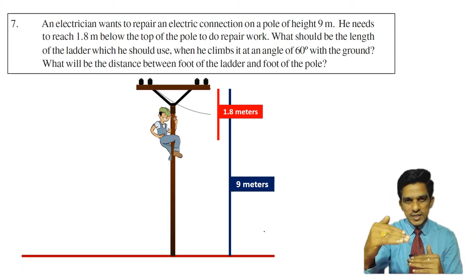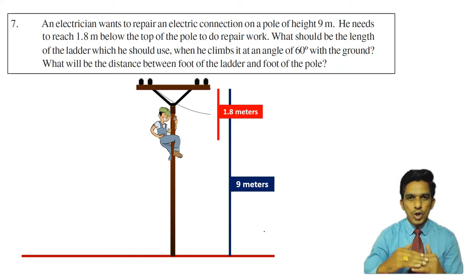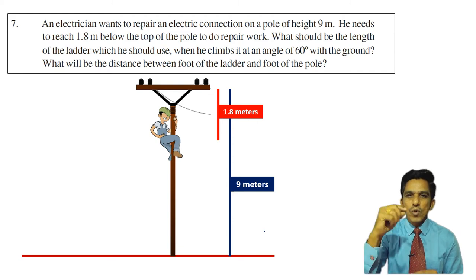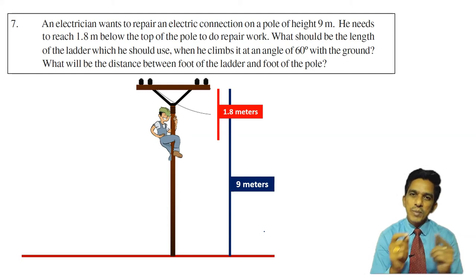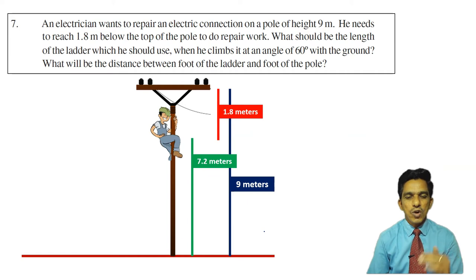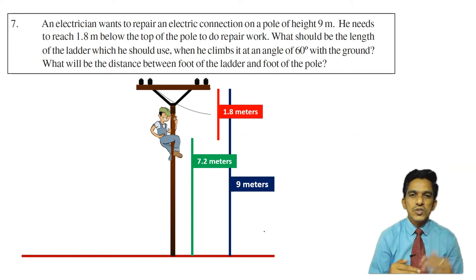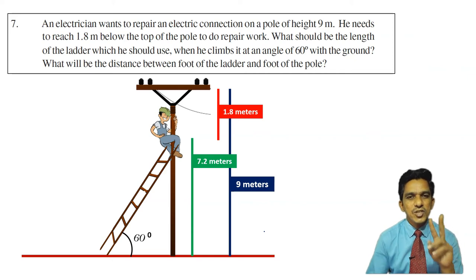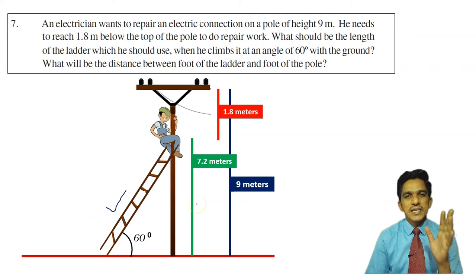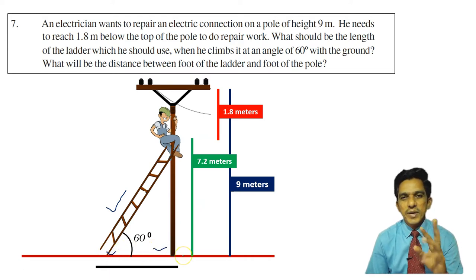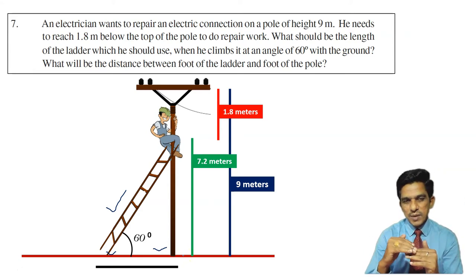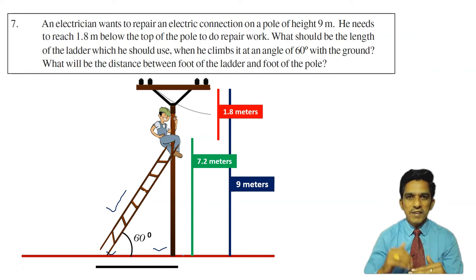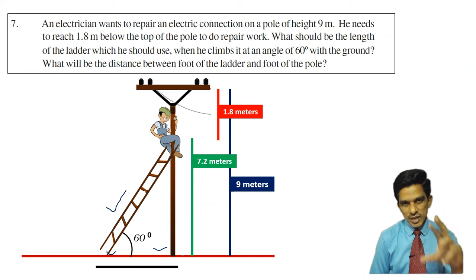The total height of the pole is 9 meters. He has to reach a point 1.8 meters below the top. So 9 minus 1.8 is 7.2 meters. The height from the ground that the electrician needs to reach is 7.2 meters. He uses a ladder making an angle of 60 degrees with the ground. We have to find two values: the length of the ladder and the distance between the foot of the pole and foot of the ladder.